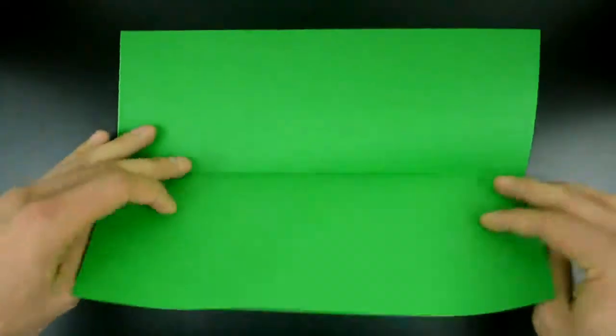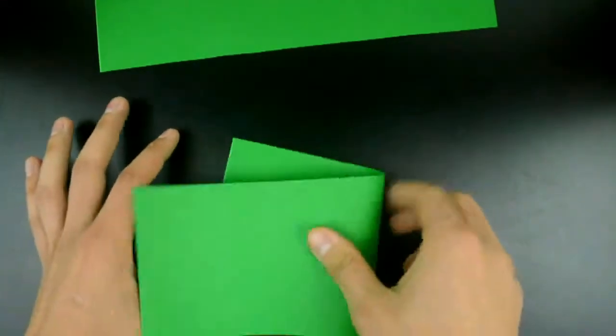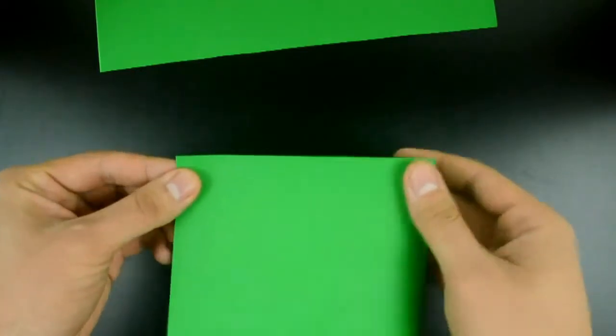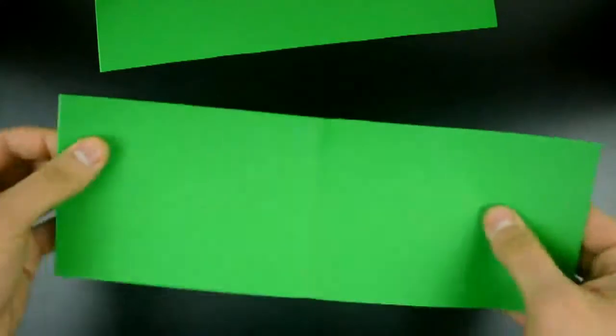Now, cut the paper on this crease. Now fold one of these rectangles in half as well, now in this position. And again, cut on the crease.